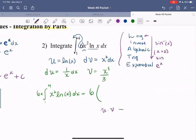I'm going to write it underneath so we know what we need to fill in. u times v minus the integral from 1 to 4 of v du.